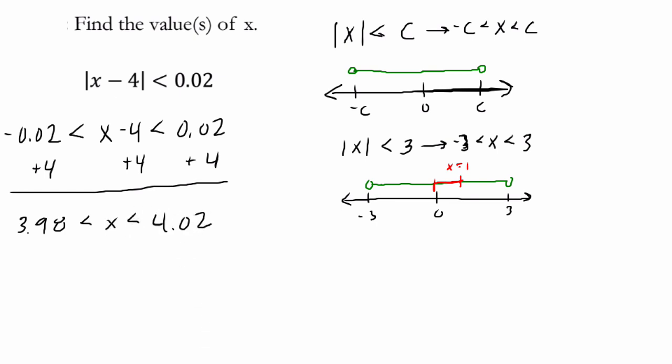Another way to think about this problem is to say, OK, the distance between 0 and this number has to be less than 0.02. So one way to think about the distance between x and 4 from 0 is less than 0.02.